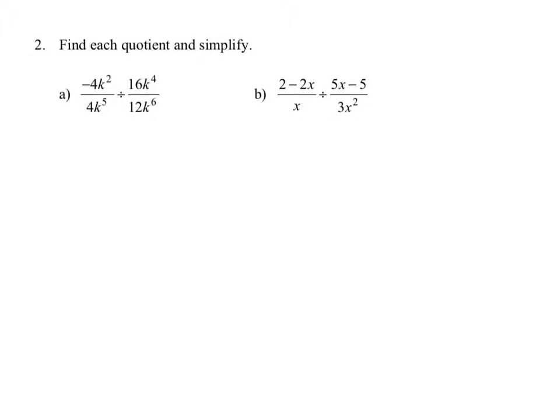Find each quotient and simplify. With division problems, when you're dividing by a fraction, that's the same thing as multiplying by the reciprocal. So we're going to write this problem as negative 4k squared over 4k to the fifth, change that division to multiplication, and write the reciprocal: 12k to the sixth in the numerator and 16k to the fourth in the denominator. We can then simplify common factors — 4 and 4 in the numerator and denominator: 4 goes into 4 one time.